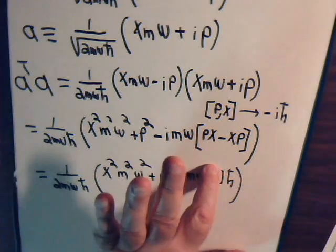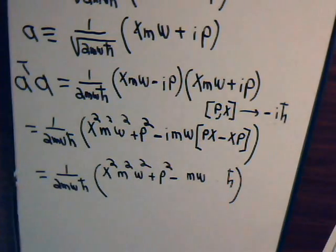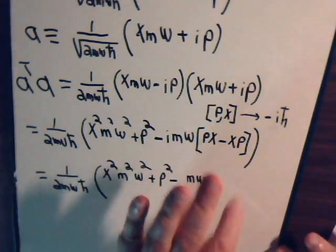This times this is positive. We have i squared is negative 1. So, that's going to give us a minus sign here. Once we take out the i factors, we have minus m omega h bar.